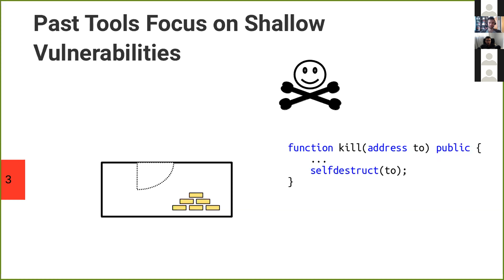Many of you are already familiar with past work on statically finding vulnerabilities in smart contracts, and many of these are geared towards shallow bugs. I'll be using an analogy throughout the rest of the presentation: I'll be talking about pirates trying to steal gold from your room — rooms, doors, gold, pirates, keys, and locks.